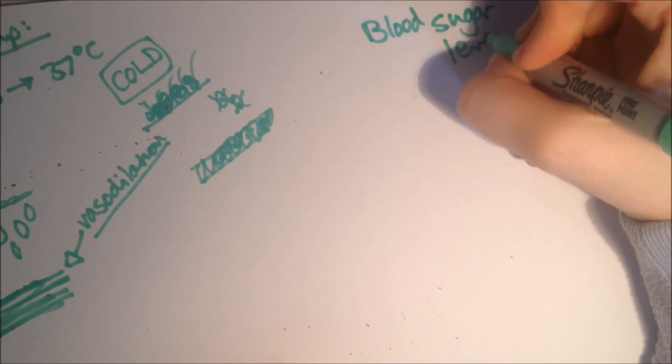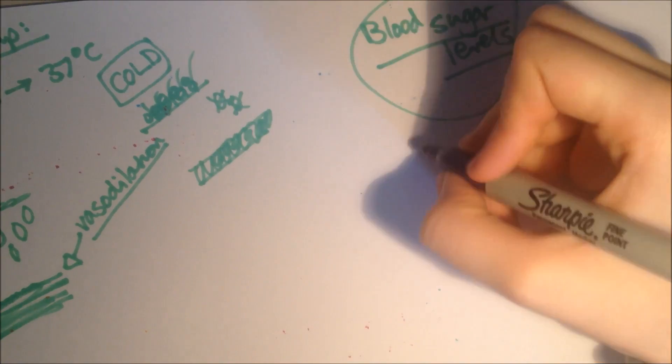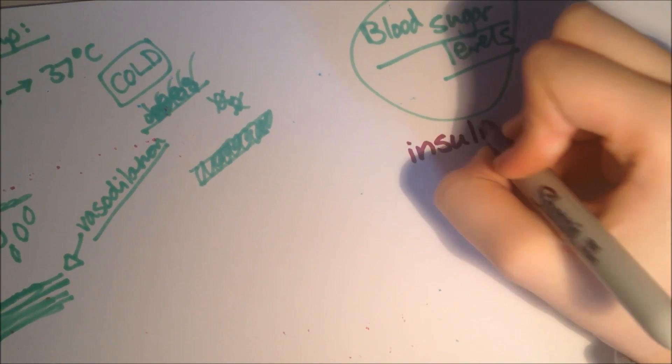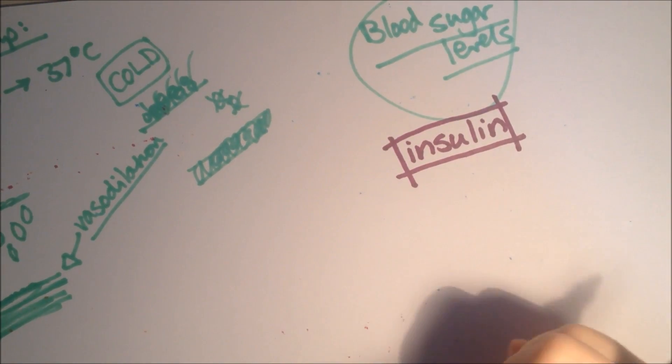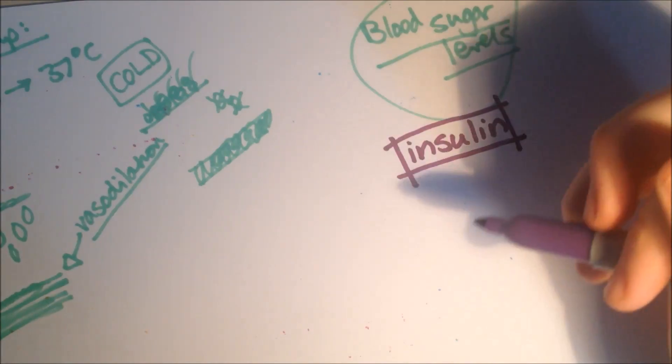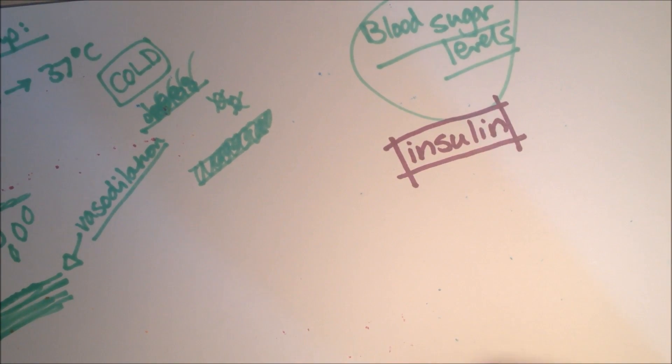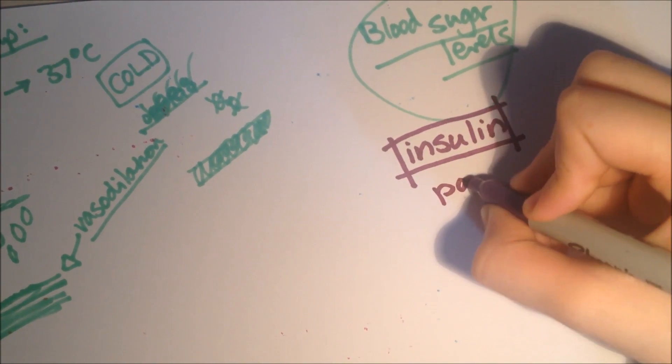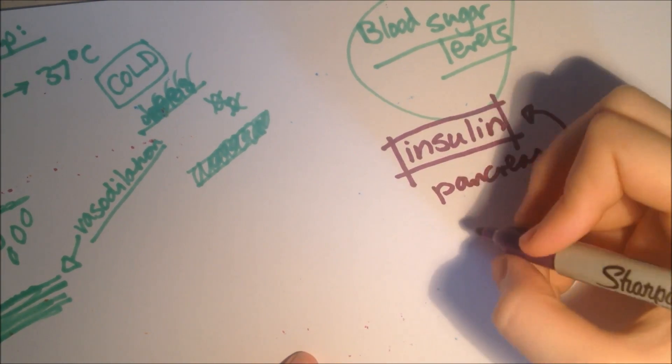Now we're onto, controlling blood sugar levels. The chemical that controls your blood sugar level, is called, insulin. So, glucose is put into the blood in many ways. So, carbohydrate foods, puts glucose into the blood. Normal respiration removes glucose from the blood. And, exercise also removes glucose from the blood. But, it must be kept steady. And, the changes are monitored and controlled by the pancreas, which produces, insulin.